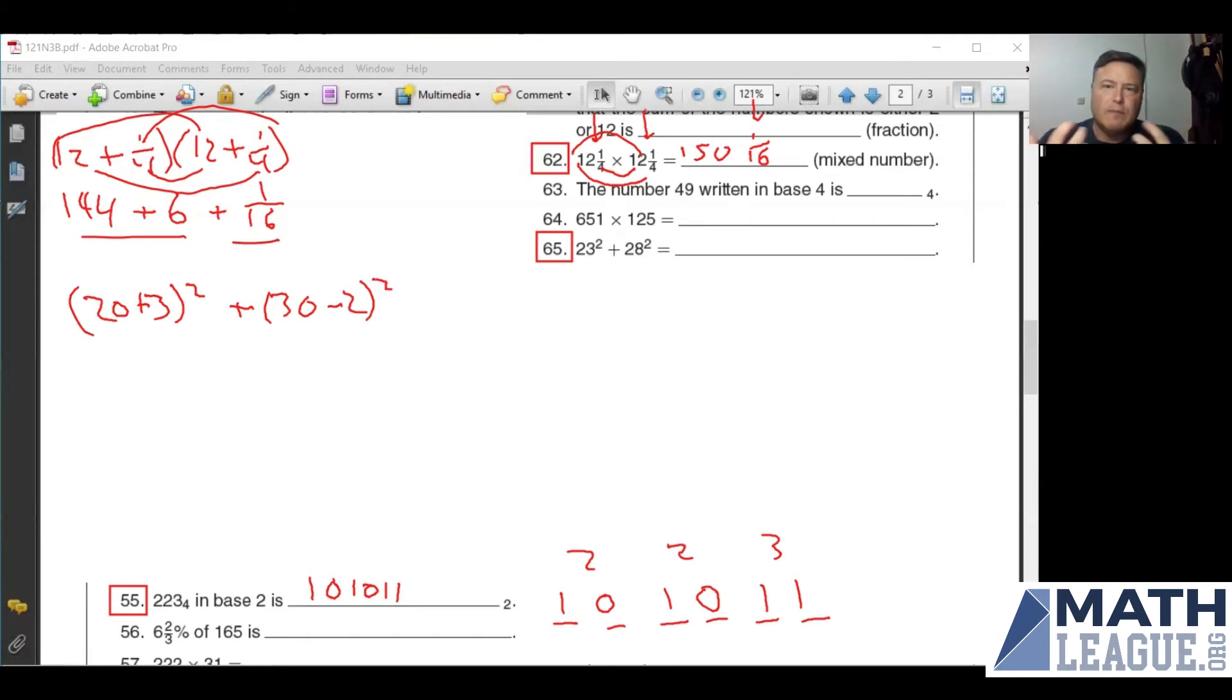which is 30 minus 2 squared. Now the key to this is recognizing that I've got a 2 and a 3 in both of them. 20 plus 3, 30 minus 2. So in both cases, I have a 2 and a 3. And one of them, the 2 is multiplied by 10. The other one, the 3 is multiplied by 10. And then whichever one isn't multiplied by 10, we've got it as a unit. And then one of them is added together and the other one is subtracted,